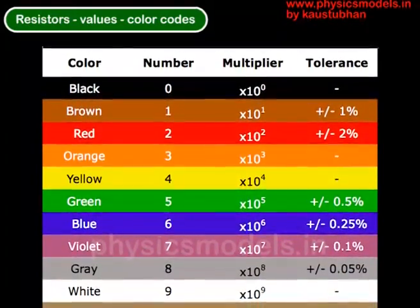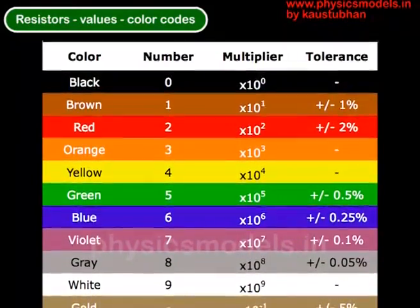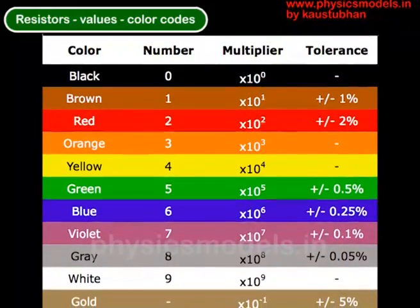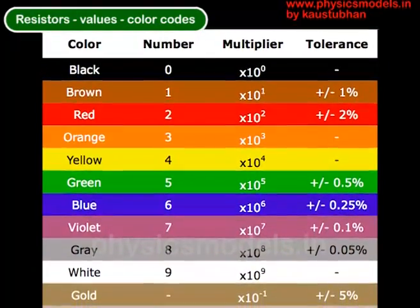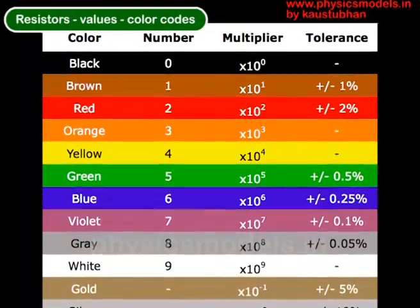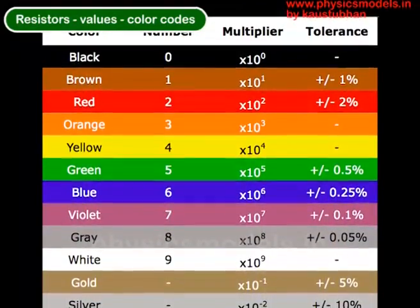If the fourth band is also red then it means that the manufacturing process turns out a tolerance of plus minus 2% on the value 2200.